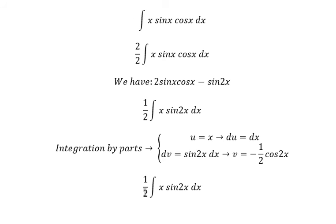Because we still have 1 over 2 here, we keep 1 over 2. We have u multiplied with v, which gives us negative x over 2 cos 2x.